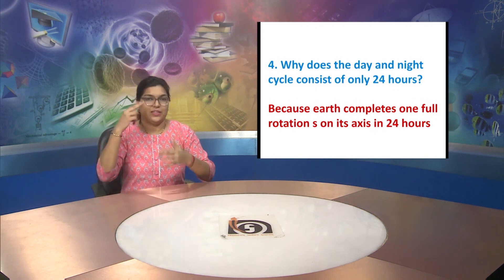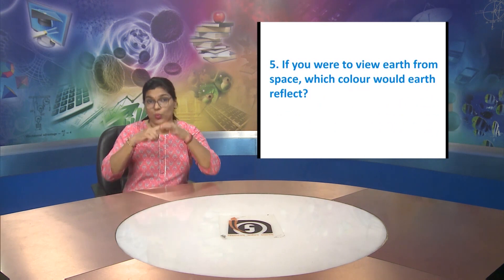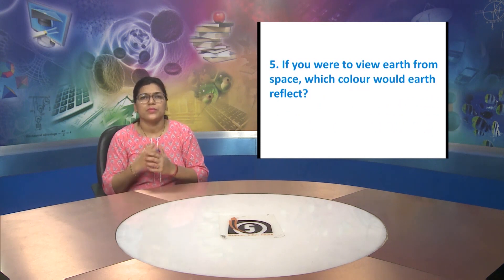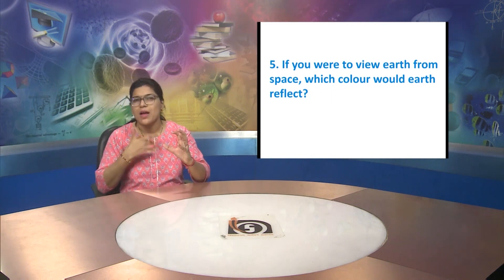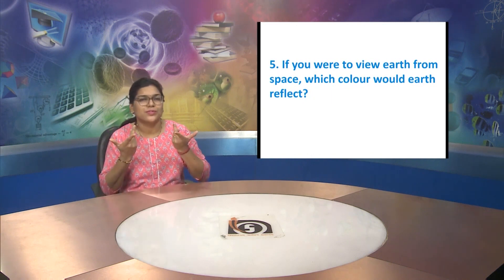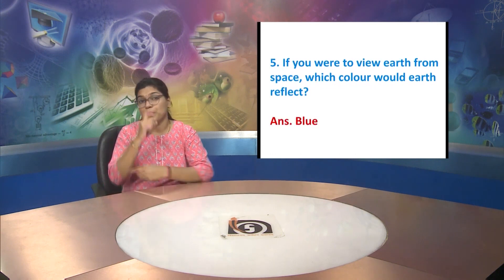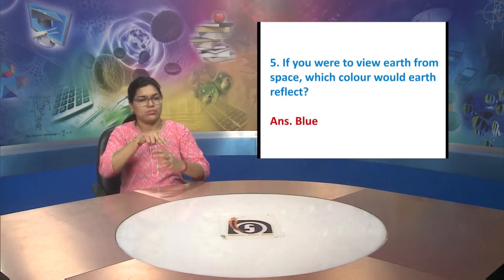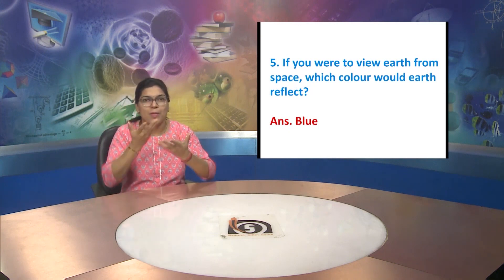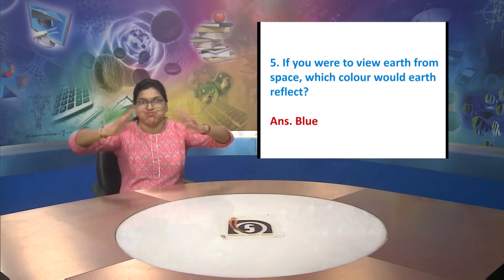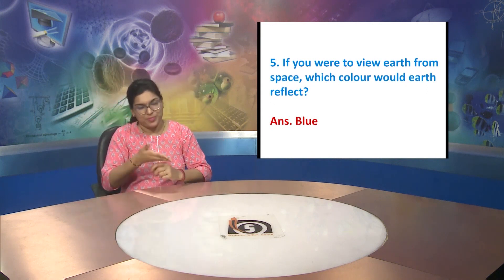Question five: Earth completes its full orbit in three hundred sixty-five days. If you were to view the Earth from space, which color would it reflect? The answer is blue. The reason for the blue color is that Earth consists of seventy percent water composition.